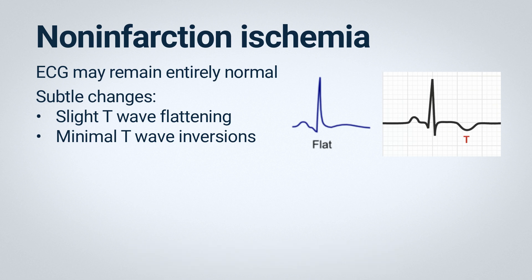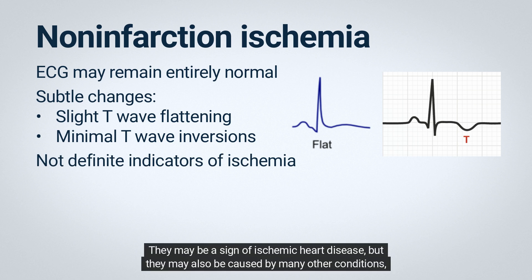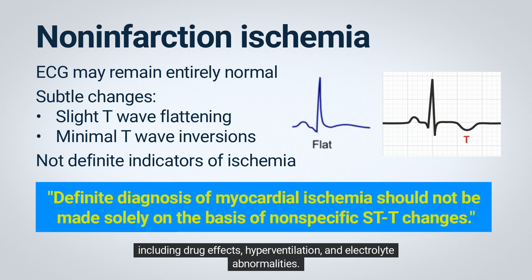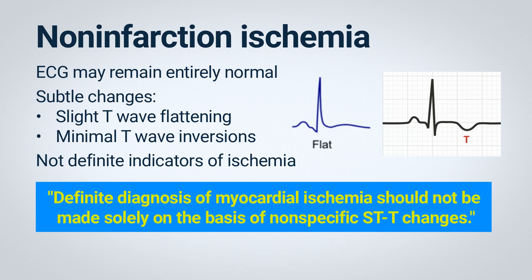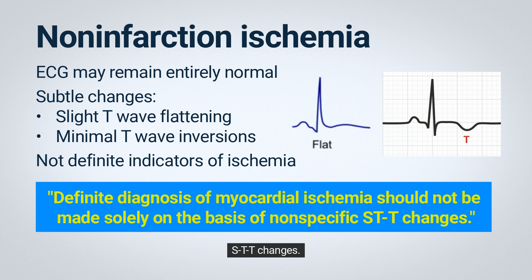Non-specific ST-T changes may be abnormal but they are not definite indicators of ischemia. They may be a sign of ischemic heart disease, but they may also be caused by many other conditions including drug effects, hyperventilation, and electrolyte abnormalities. Therefore a definite diagnosis of myocardial ischemia should not be made solely on the basis of non-specific ST-T changes.